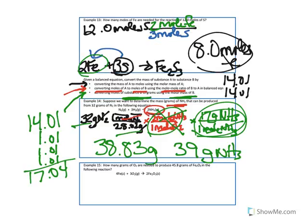Let's try another example. How many grams of O2 are needed to produce 45.8 grams of Fe2O3 in the following reaction? Step 1 is to convert mass of A — in this case, 45.8 grams of Fe2O3 — to moles of A using the molar mass.